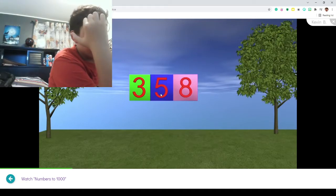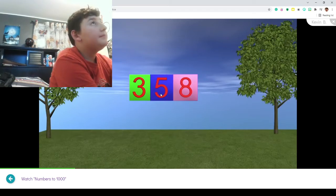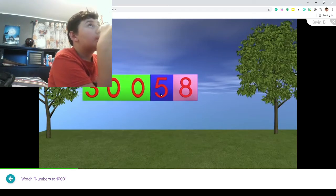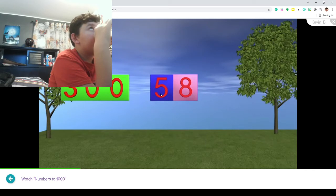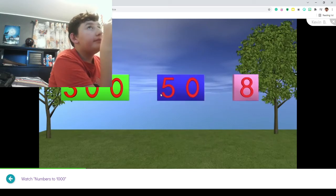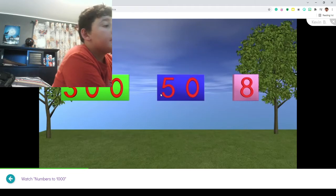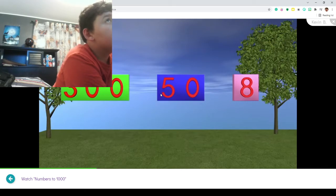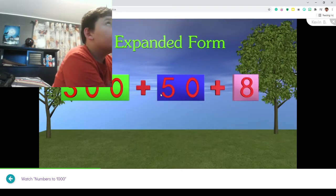The 3 in this number is in the hundreds place, so the 3 is worth 300. Now we have the 5. The 5 in this number is worth 50 because it is in the tens place. The 8 in this number is only worth 8 because it is in the ones place. So if we were to write the number 358 in expanded form, we would have 300 plus 50 plus 8.